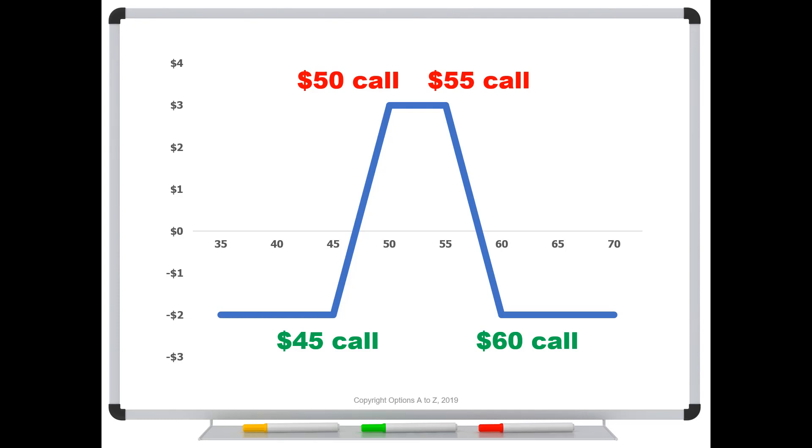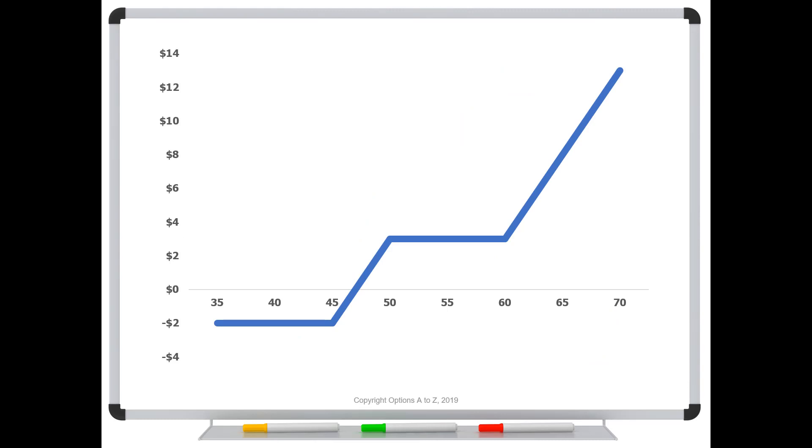Well, because I've constructed it with all calls, one morph would be to just buy back this short 55 call right here. Notice that gives me a bull spread on the left, the 45-50, which is bullish. It's limited, but it's still bullish. And I have this long 60 call out here to make an unlimited amount. So with one simple trade of buying back that 55 call, I have changed or morphed this profit and loss diagram from this shape into this. Yeah, it's kind of a weird looking profit and loss diagram, but at least it has unlimited capabilities up here to the upside. We've got unlimited deltas.